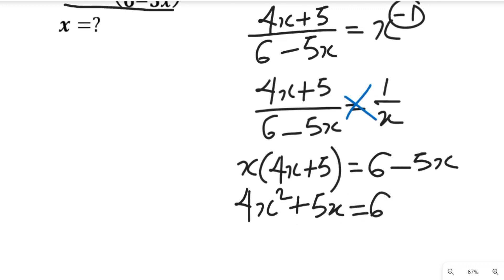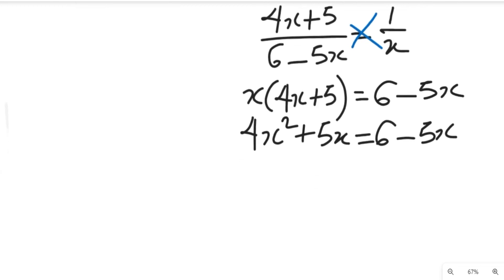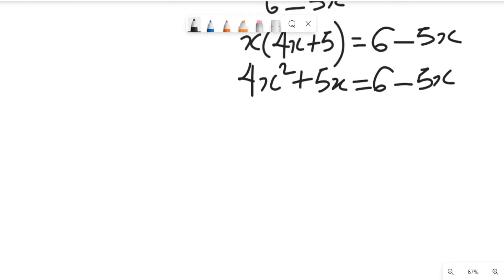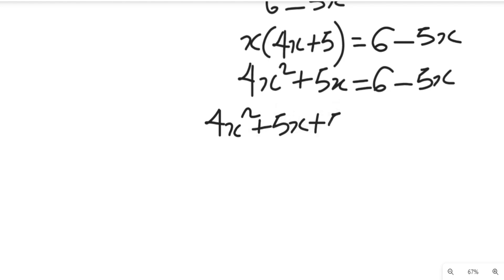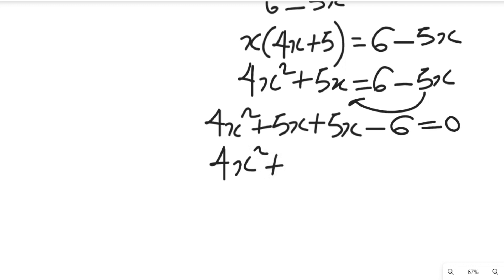So this will give us 4x squared plus 5x, which will be equal to 6 minus 5x. So we're going to collect like terms. If we collect like terms, the equation becomes 4x squared plus 5x plus 5x, because this comes over here, minus 6 equals 0. So this will become 4x squared plus 10x minus 6 equals 0.